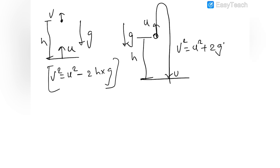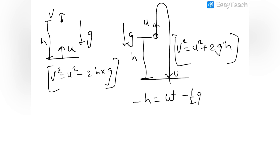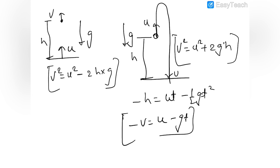When applying the second equation of motion for the ball thrown from a building, we take the direction of u (upward) as positive. The net displacement is -h (downward), so -h = ut - ½gt². For the first equation: velocity at ground is downward, so -v = u - gt. This illustrates how sign conventions apply consistently across all three equations.